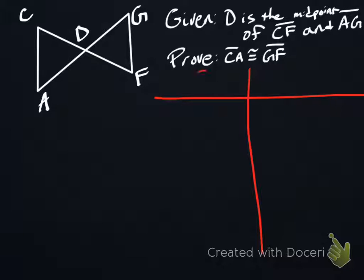We're going to use the two-column method. So you've got your statements and your reasons. We'll start with the given. The given is that D is the midpoint of CF and AG.